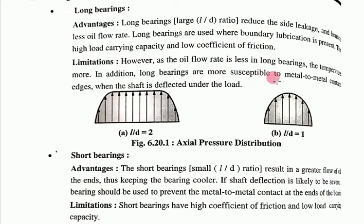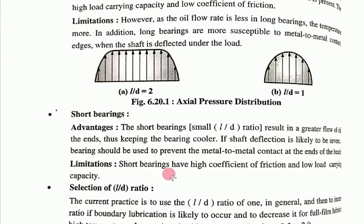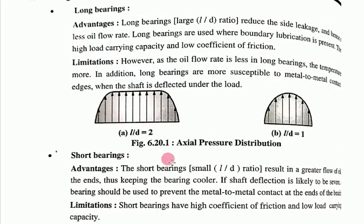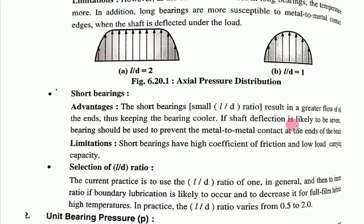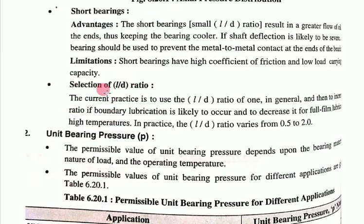The limitation of a long bearing is more metal-to-metal contact and more heat generation. For short bearings, the advantages are the reverse: greater oil flow out of the ends keeps the bearing cooler. If shaft deflection is likely to be severe, a short bearing should be used to prevent metal-to-metal contact at the ends. However, short bearings have a high coefficient of friction and low load-carrying capacity.